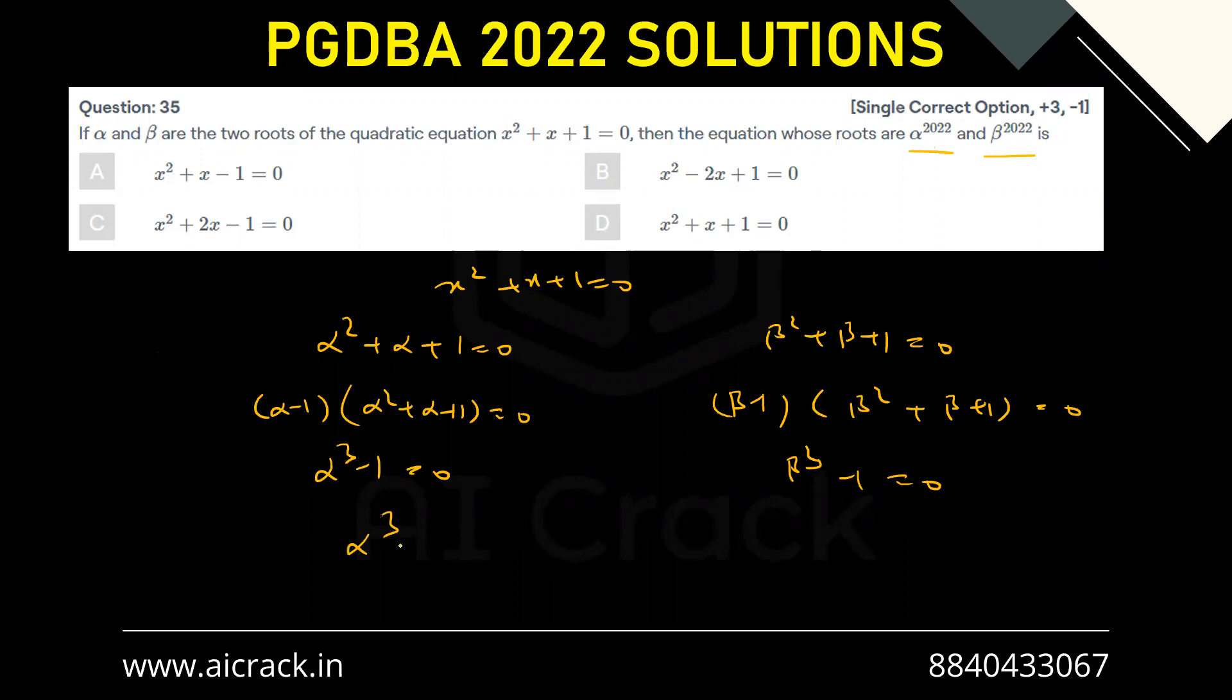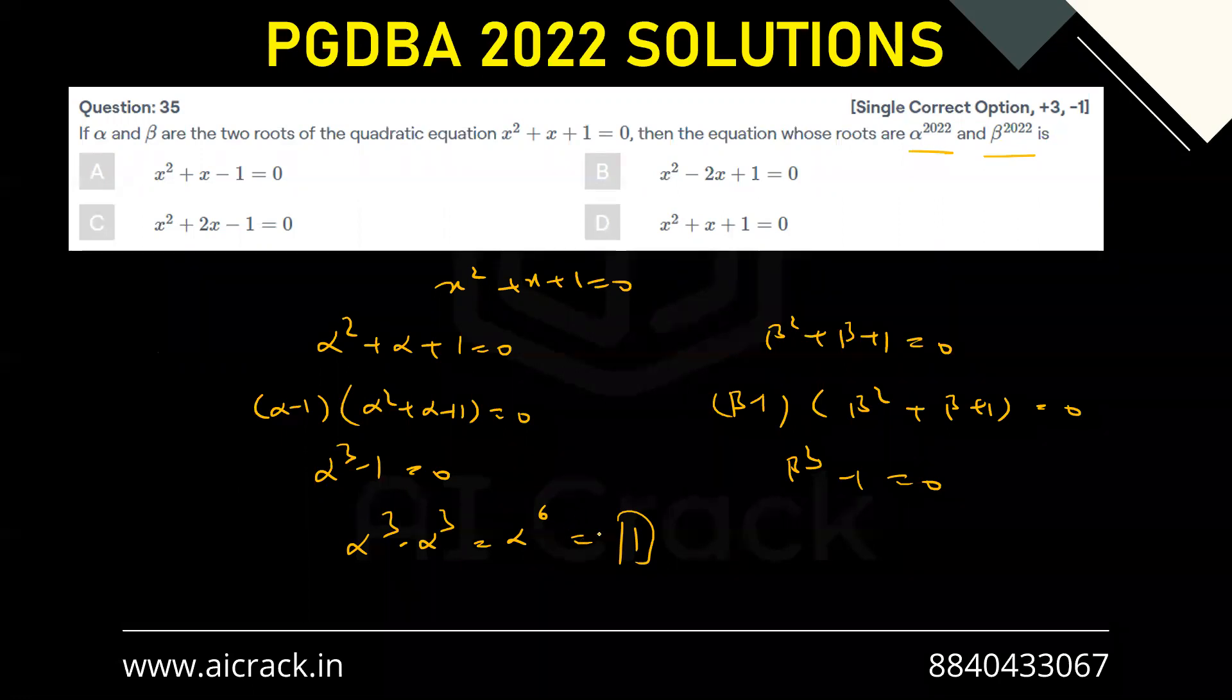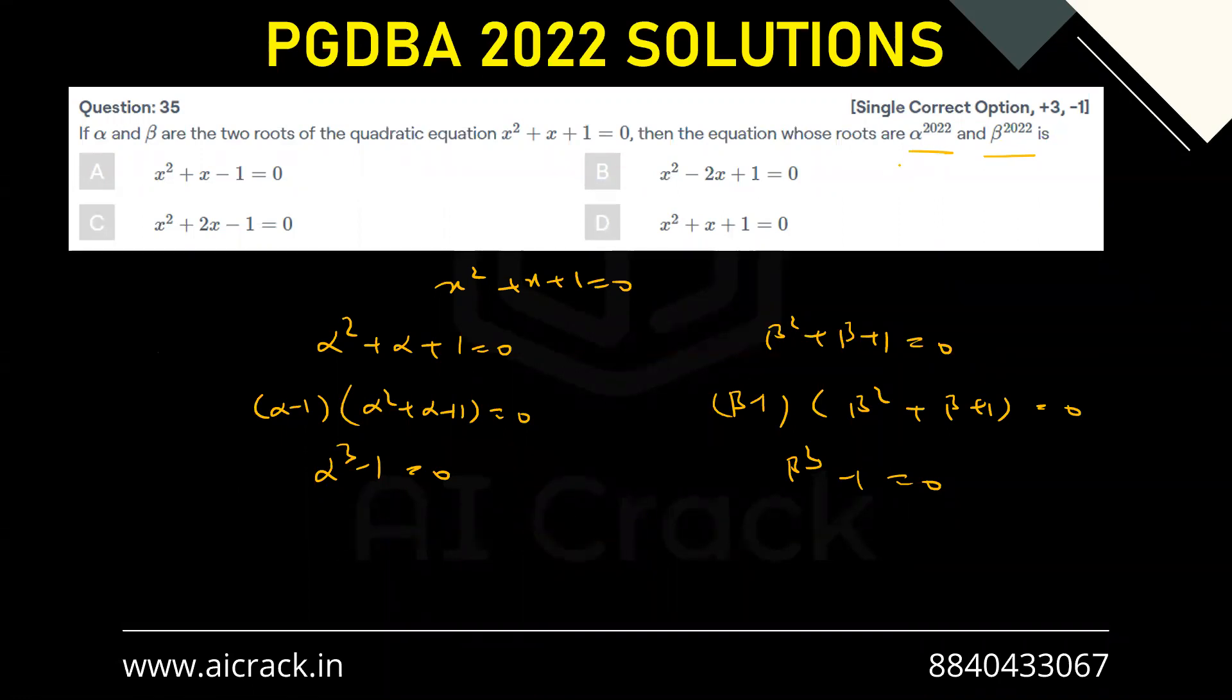If I write alpha^6, that would be 1 only, because alpha^3 = 1. So alpha raised to any multiple of 3 would be 1. Since 2022 is a multiple of 3 (we can see that 2 + 0 + 2 + 2 = 6), basically alpha^2022 = 1.